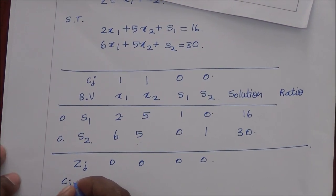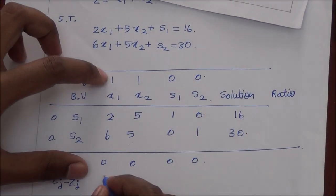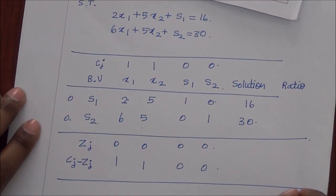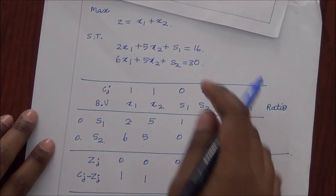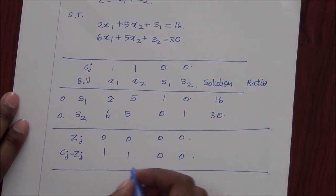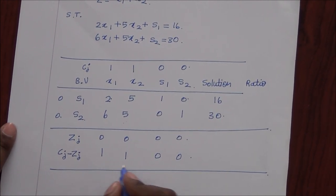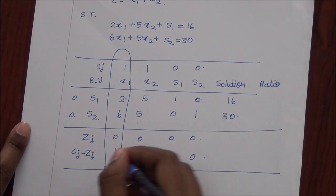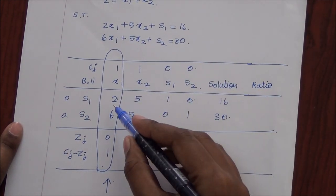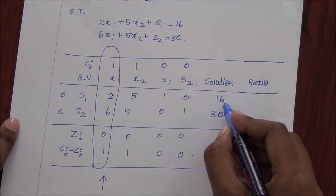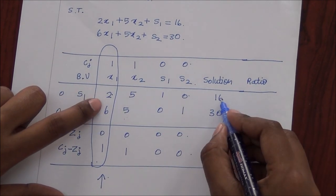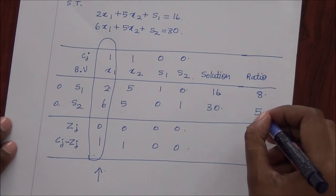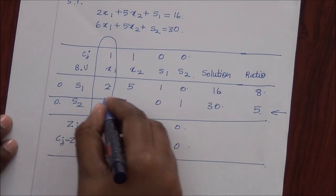We then determine cj minus zj. Over here it is 1 minus 0 equals 1, 0 minus 0 equals 0. As it is a maximization problem, we choose for the pivot column the maximum value from cj minus zj. As both are 1, we may choose either one. Now we compute the ratio using the values in the pivot column — that is, solution divided by the value in the pivot column: 16 by 8 is 2, and 30 by 6 is 5. We choose the minimum ratio, which is 5, and thus determine our pivot row.